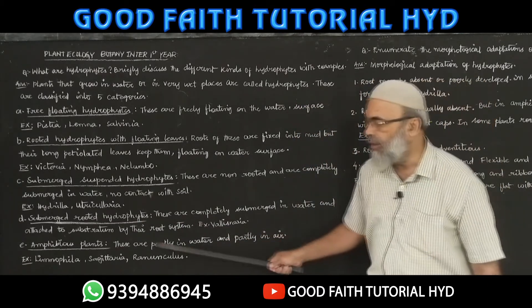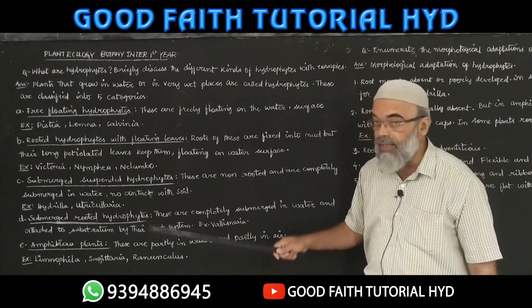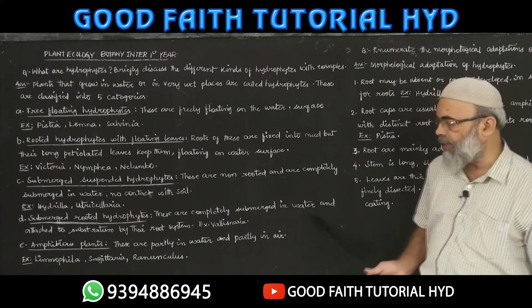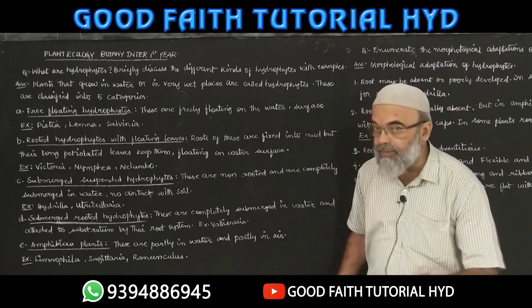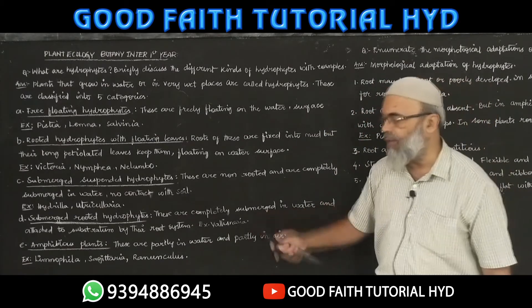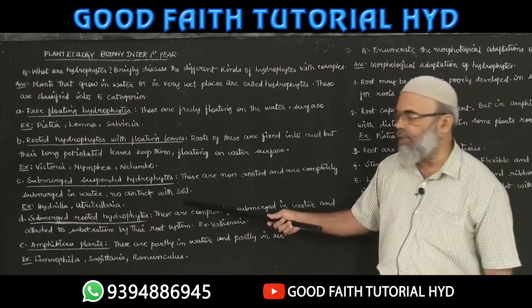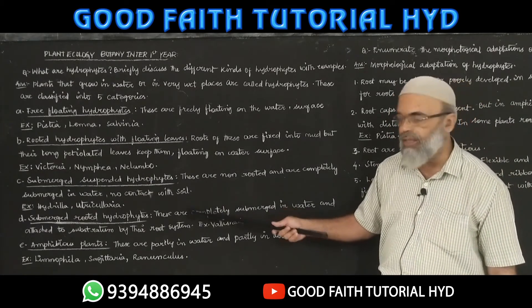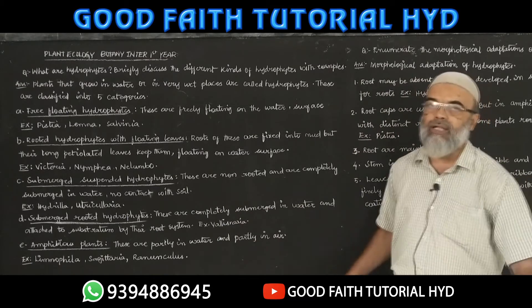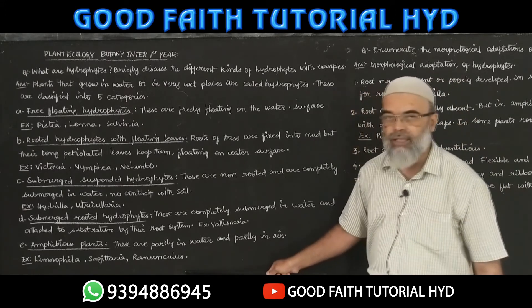Fourth category: submerged rooted hydrophytes. These are completely submerged in water and attached to the substratum by their root system. Example is Vallisneria. Unlike Hydrilla, which has no contact with soil, Vallisneria has long roots that go deep down and remain in contact with soil.